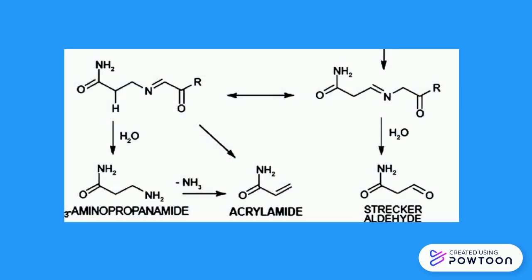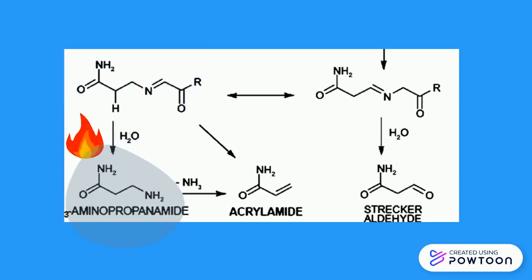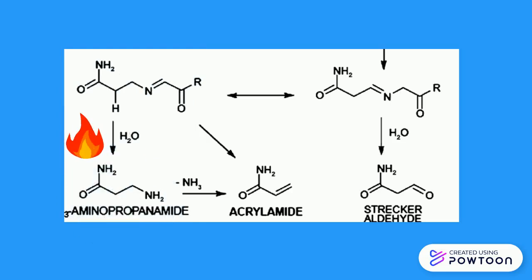Lastly, the decarboxylated Schiff intermediate will be hydrolyzed in the presence of heat to form 3-aminopropionamide. The 3-aminopropionamide will then be further degraded via the elimination of ammonia to form acrylamide.